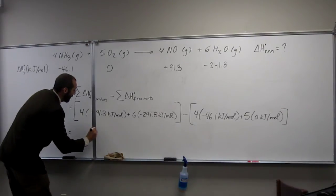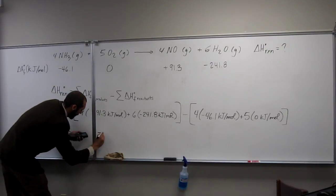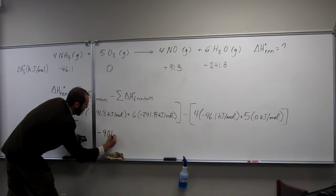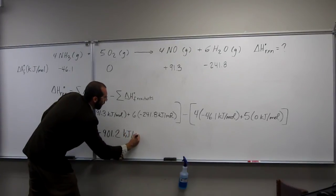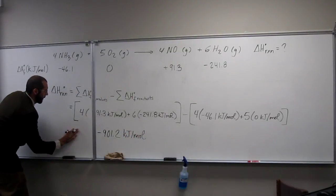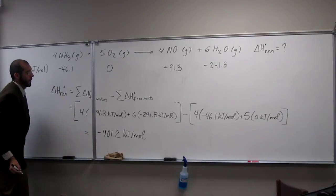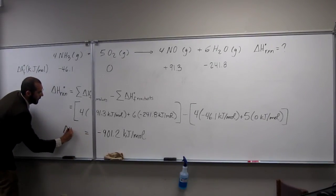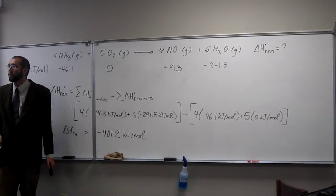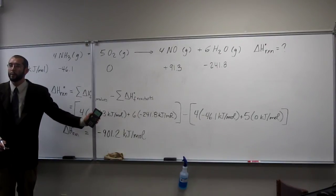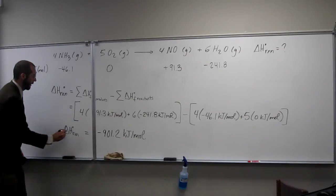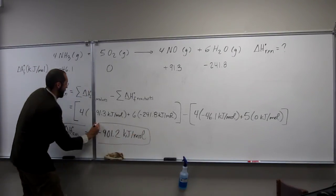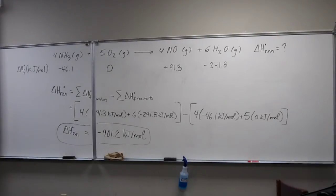I got negative 901.2 kilojoules per mole. So, that's the delta H of this reaction and you can use the heat of formations to do this. Is everybody okay with this type of problem? Any questions about this one? Let's just box this and call it a tick.